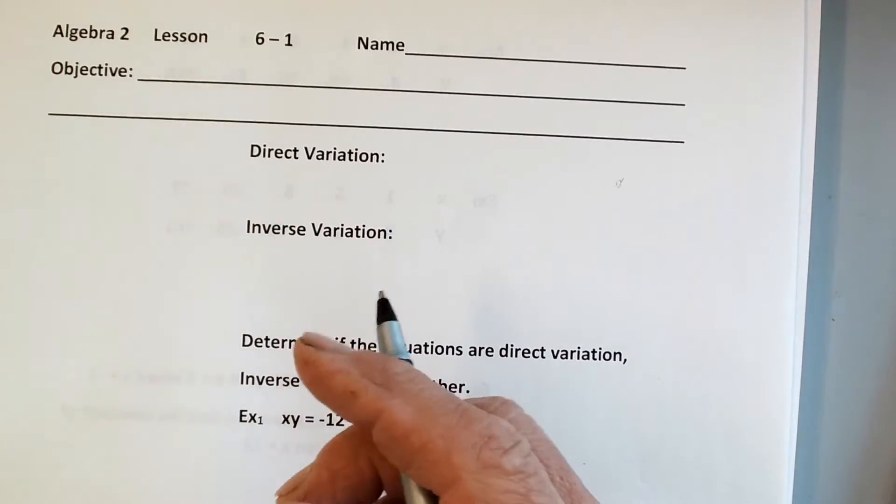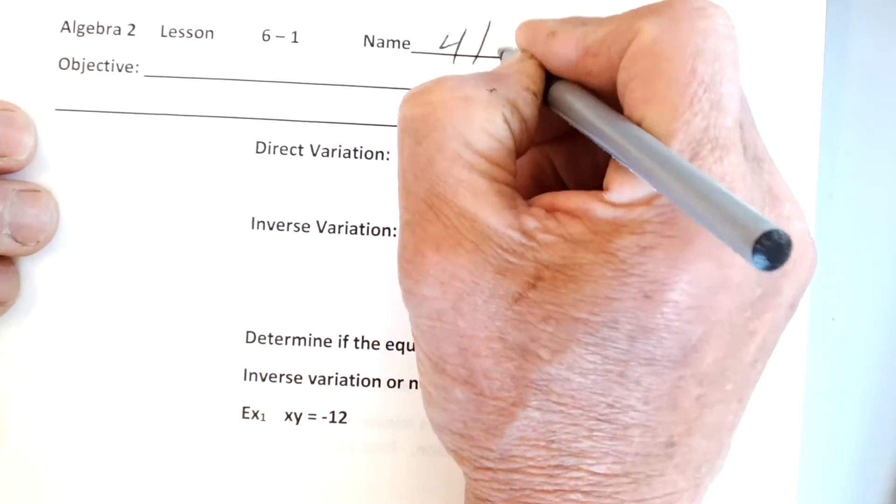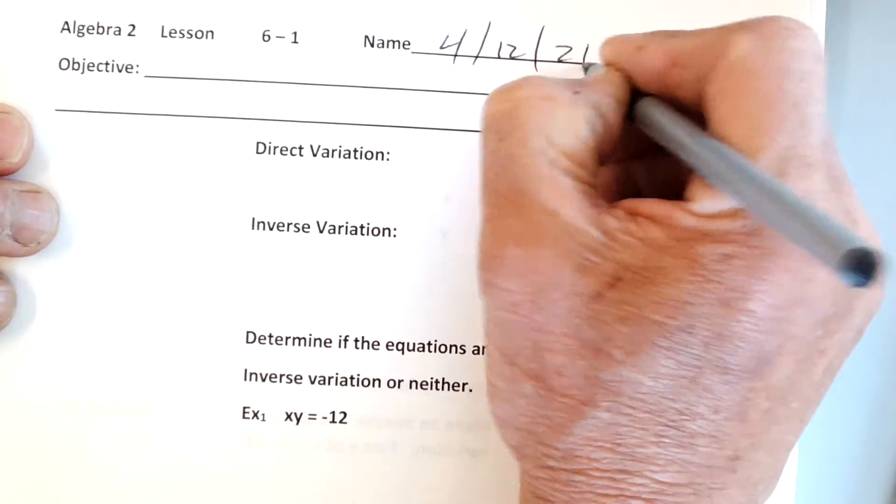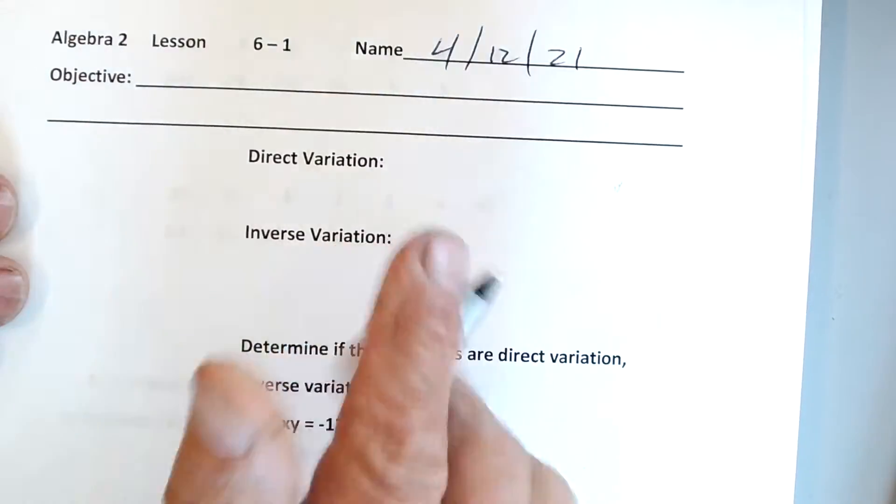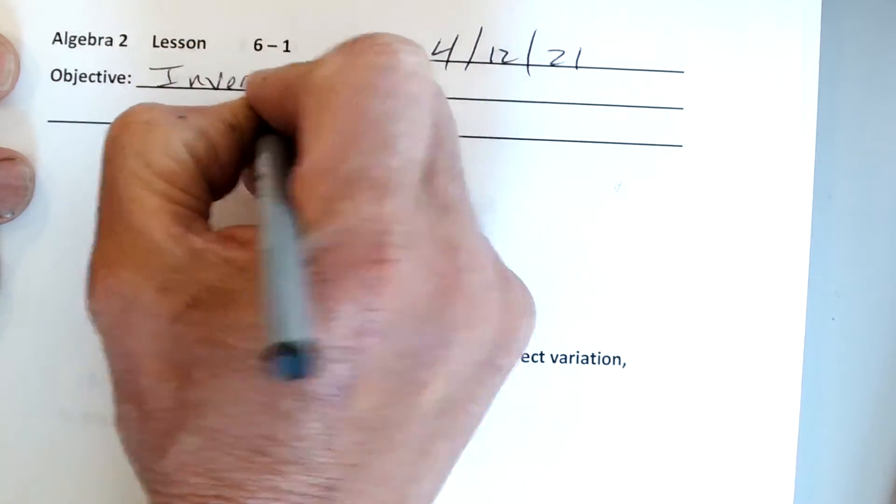Happy after spring break. It is April 12, 2021. Today our objective is to talk about inverse variations.